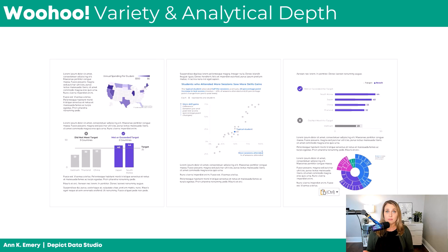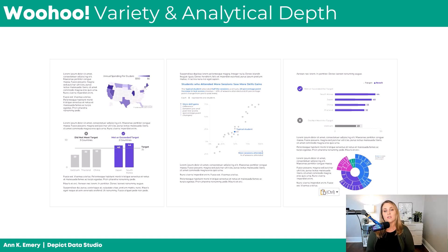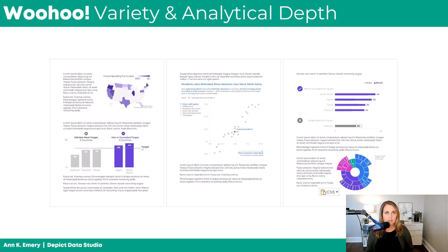For example, if you add a map, it shows that you've done the thinking behind the scenes to see if there are any geographical patterns. Or if you add a scatter plot, it means you've done the critical thinking behind the scenes to look for correlations between your variables.